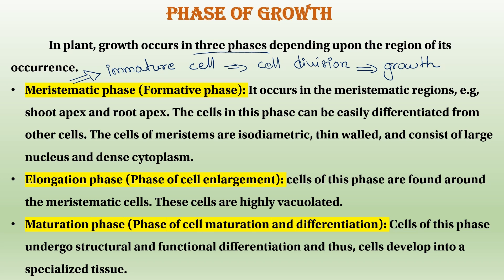In this phase, cells are developed into a specialized tissue. It is developed into a specialized tissue through maturation and differentiation.